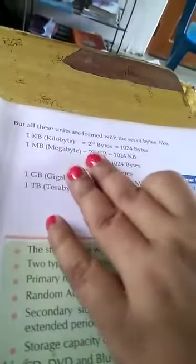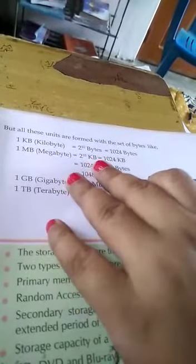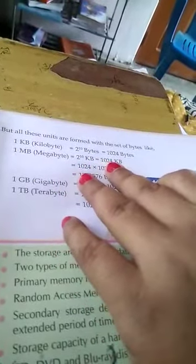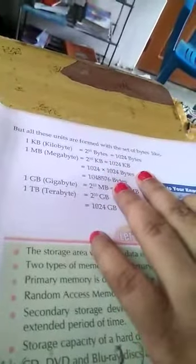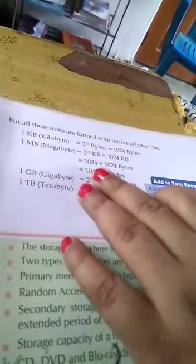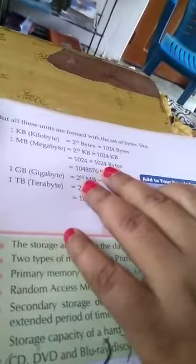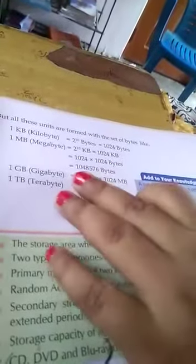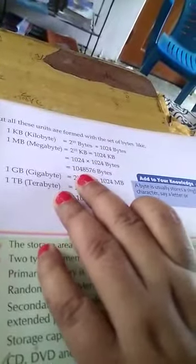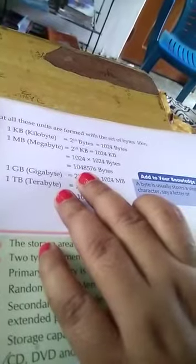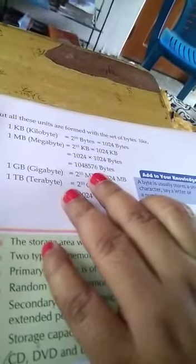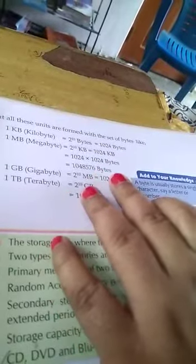1 MB is equal to 2 to the power 10 KB, which is equal to 1024 KB. That equals 1024 multiply 1024 bytes, which is 1,048,576 bytes.